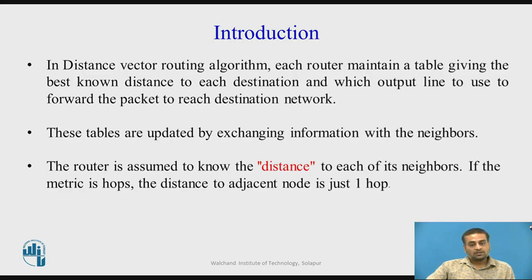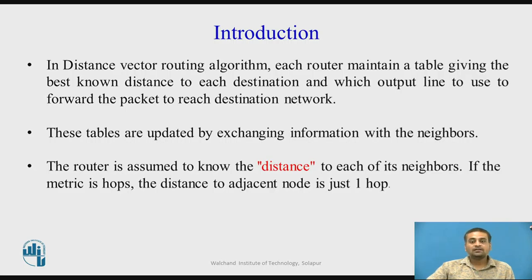In distance vector routing, each router maintains a routing table containing the best known distance to each destination network and which output line to use to forward the packet so it reaches the destination network. These routing tables are updated by exchanging information with neighbors.